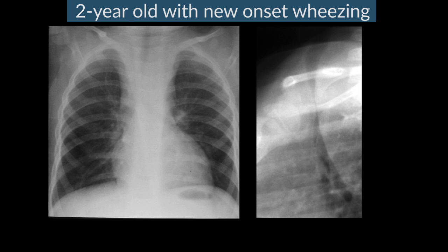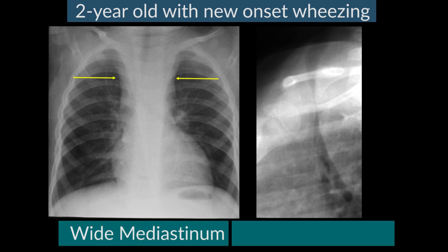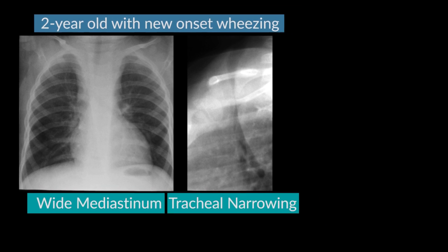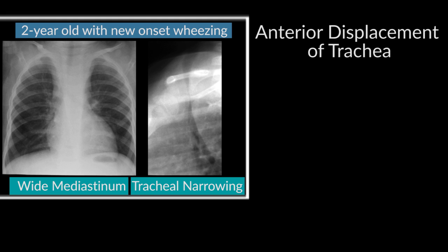Here is a child where these features are not present. This two-year-old presents with new-onset wheezing, and immediately we see that the mediastinum is much too wide. The thymus at this age should be much smaller, so this is an abnormal wide mediastinum. We cannot see the air column of the trachea on the frontal film all the way to the bronchi — we lose it in the mid-portion. On the lateral view, the trachea is not only markedly narrowed at the thoracic inlet but also anteriorly displaced by a posterior structure, suggesting the esophagus or lymph nodes.